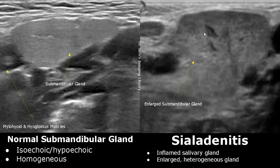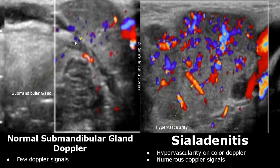The left image shows a normal color flow pattern in the submandibular gland — we only find a few Doppler signals. Whereas in the case of sialadenitis, we see hypervascularity within the gland, with more Doppler signals found inside it.